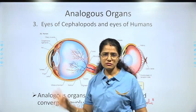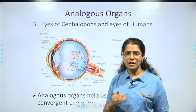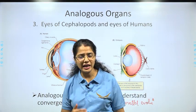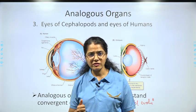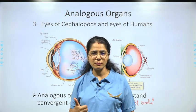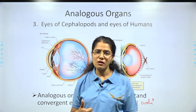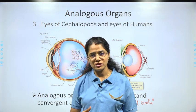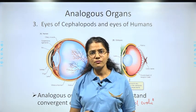With this study we are done with the first two subcategories of morphological and anatomical evidence — homologous organs and analogous organs. Thank you, and Jai Bharat!